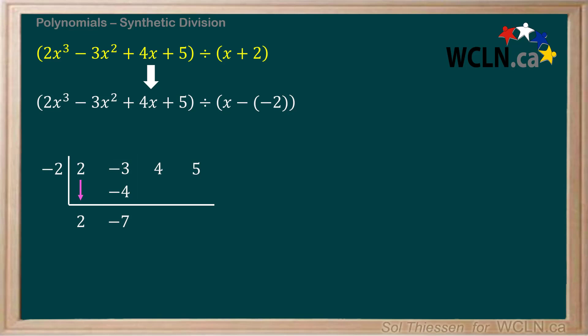From here, the process repeats itself until we've filled in the last column underneath the constant term from our dividend. We'll now multiply the negative 2 from the left with the negative 7 we just wrote to get positive 14, which we write under the next coefficient, which is the 4. We then add the 4 and the 14 to give us 18, which we write next to the negative 7 under the box.